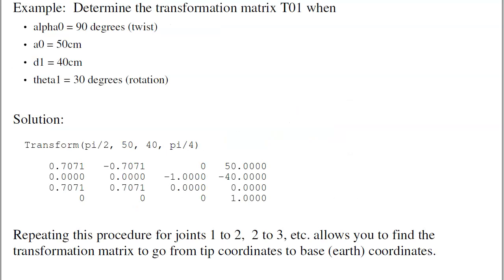For example, suppose I want to find the transformation matrix to go from joint 1 to joint 0, given that I twist by 90 degrees, A0 is 50 centimeters, D1 is 40 centimeters, and the angle is 30 degrees. If I throw that into transform, I get this — that's the transformation matrix to go from reference frame 1 to reference frame 0.